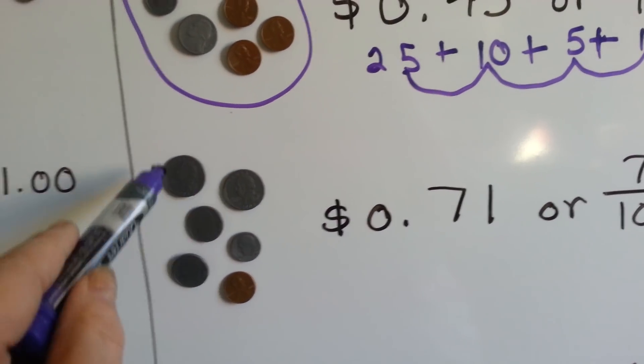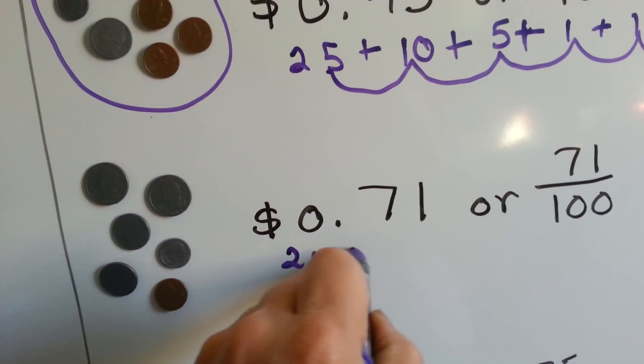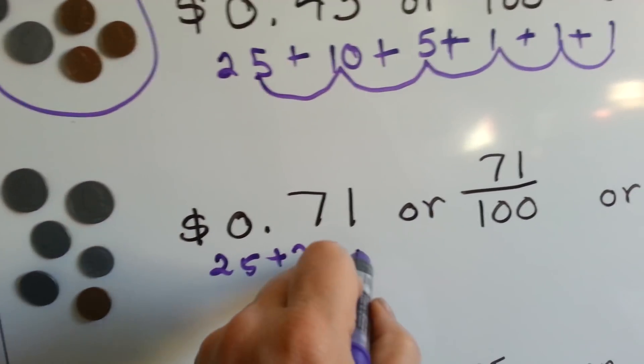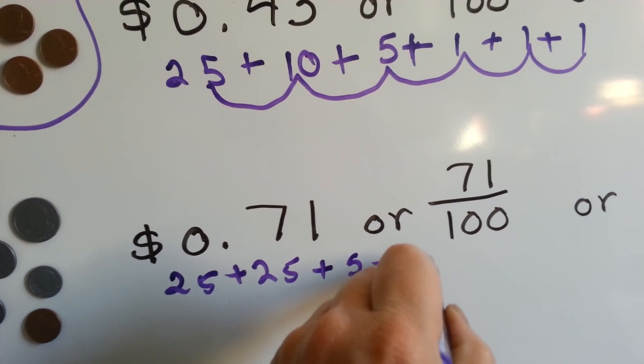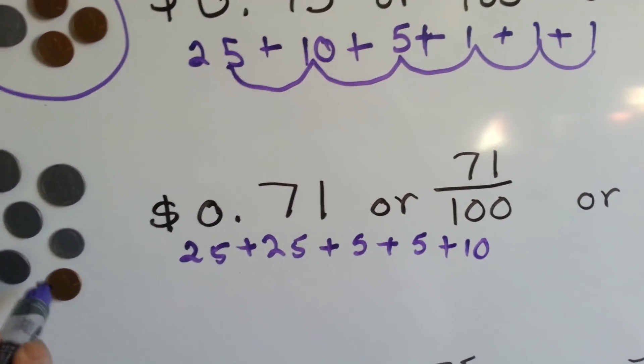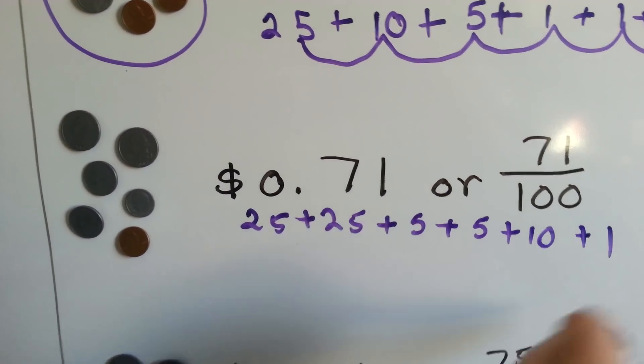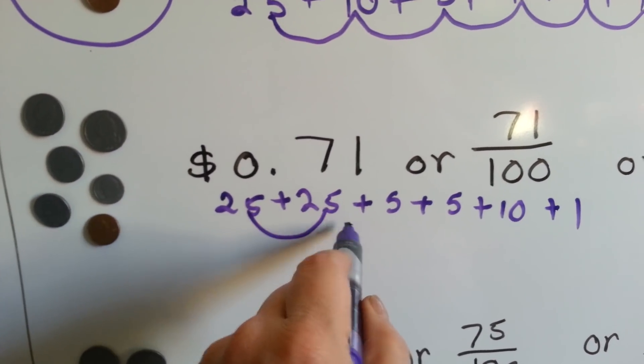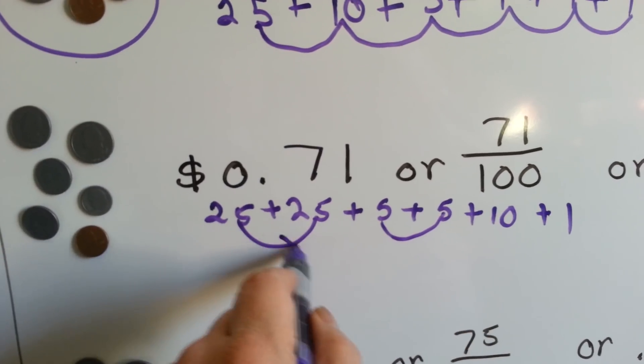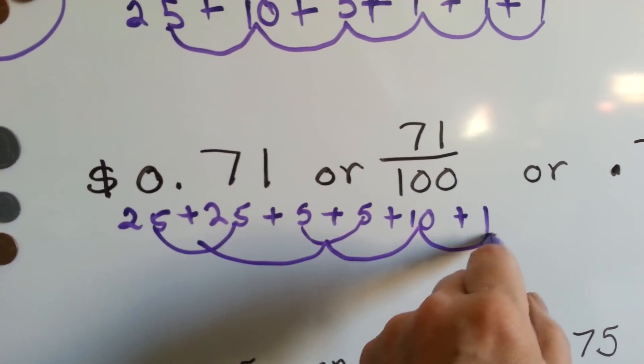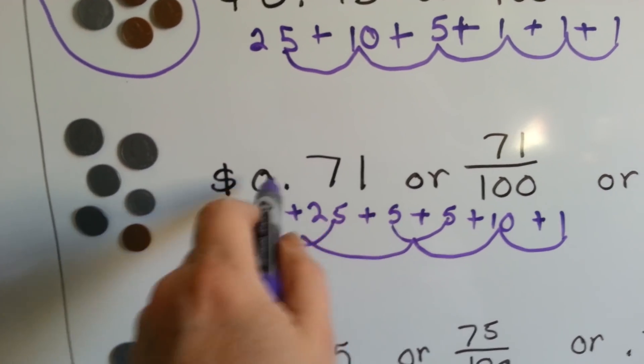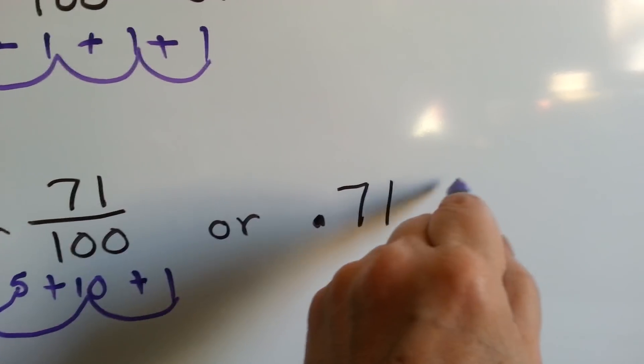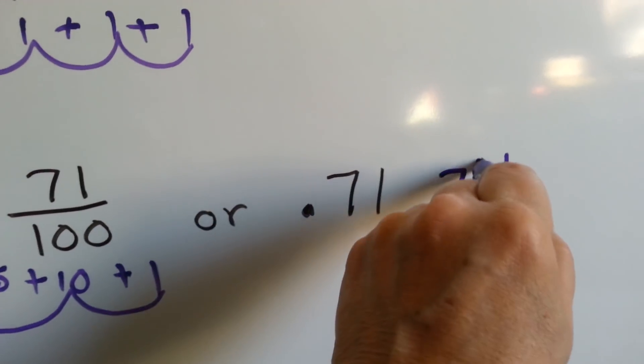Now we have two quarters, so that's 25 plus 25. We have a 5 and a 5 and a 10. And we have one penny. If we add these up, we've got 25 and 25 is 50. And if we group these together, that's 60, 71. Written as .71 for 71 cents or 71 one-hundredths. Or 71 one-hundredths like this could also be 71 cents.